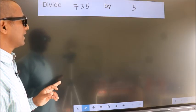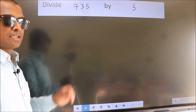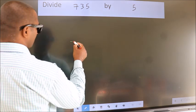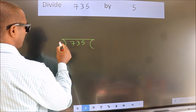Divide 735 by 5. To do this division, we should frame it in this way. 735 here, 5 here.